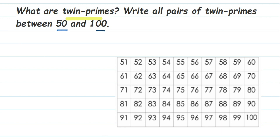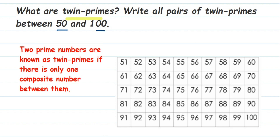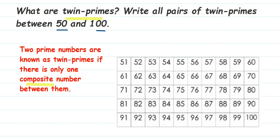So the definition of twin primes: two prime numbers are known as twin primes if there is only one composite number between them. Note that two and three are not twin primes because there is no composite number between them. As another example, 11 and 13 are twin primes because between them there is 12, which is a composite number.